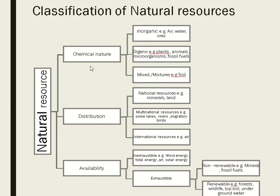Natural resources can be classified on three bases: chemical nature, distribution, and availability. By chemical nature, they are divided into inorganic, organic, and mixed. By distribution, they are divided into national resources, multinational resources, and international resources such as air. Based on availability, there are two types: inexhaustible and exhaustible, which are further divided into non-renewable and renewable resources.